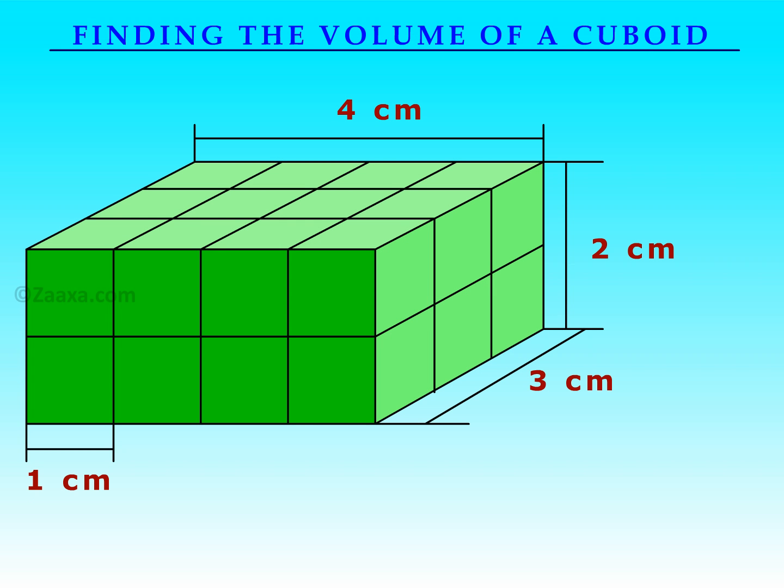Let us now learn to find the volume of a cuboid. This is a cuboid made with one centimetre cubes. The length, breadth, and height of the cuboid are four centimetres, three centimetres, and two centimetres, respectively. You can easily see there are four times three times two, or 24 one centimetre cubes. The volume of the cuboid is therefore 24 cubic centimetres.